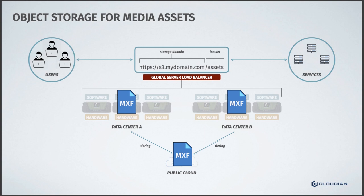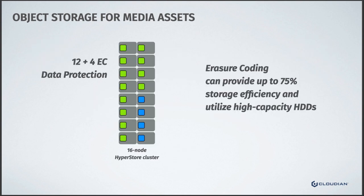Now let's jump into the economic benefits as juxtaposed to traditional SAN and NAS. The traditional price per terabyte for tier-one SAN and NAS storage is many factors greater than object storage. A key reason is that it's a different profile — tier-one primary storage is meant to be lower latency, higher performance for transactional workflows like databases or where you're constantly editing and modifying files.